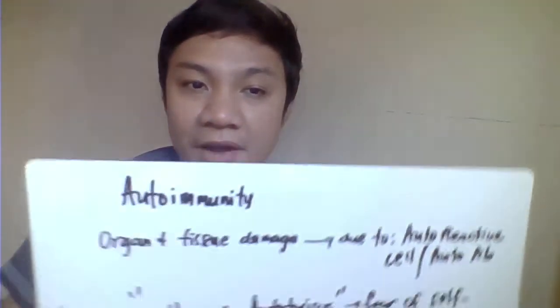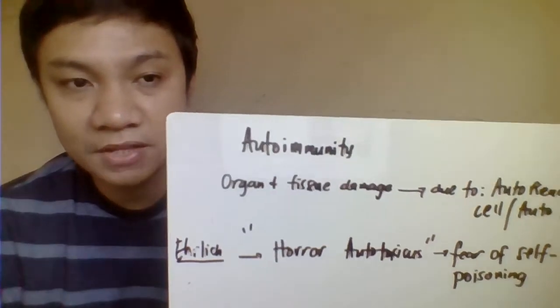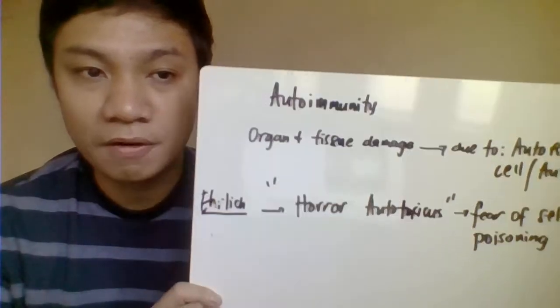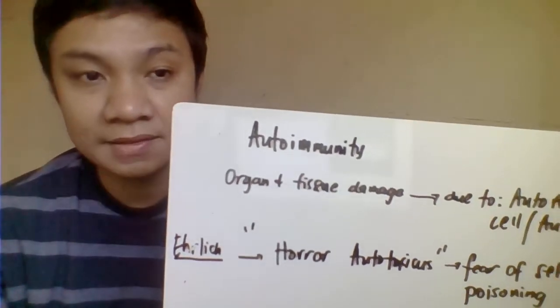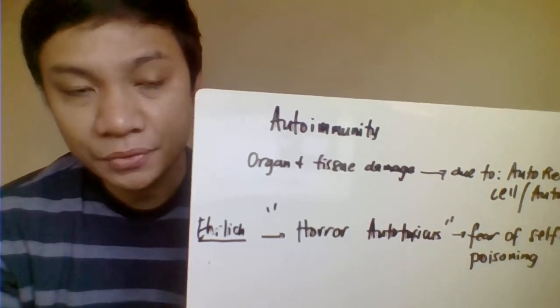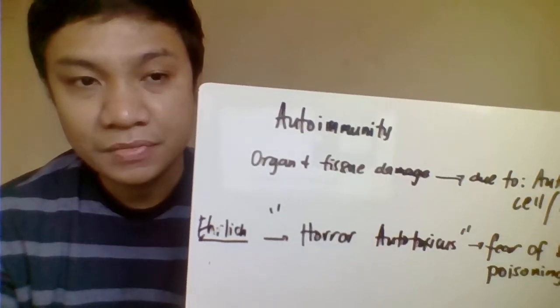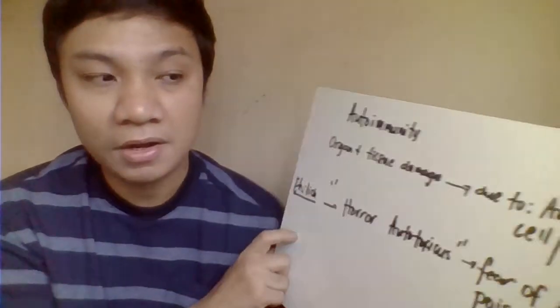Today we're going to discuss autoimmunity, covering two main autoimmune disorders: SLE or systemic lupus erythematosus, and RA or rheumatoid arthritis. Autoimmunity is defined as the production of autoreactive cells or autoantibodies that cause damage to tissues or organs through immune complex formation, which activates complement and phagocytes, resulting in complement-mediated damage. Early on, autoimmunity was described as 'horror autotoxicus,' simply the fear of self-poisoning, because you're producing antibodies that react with self-antigens.